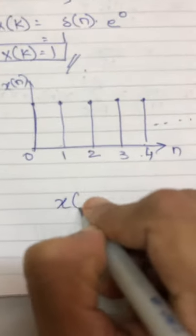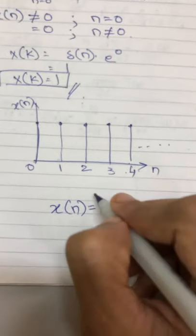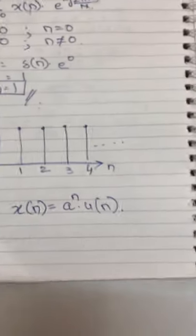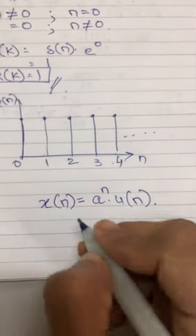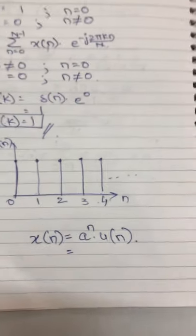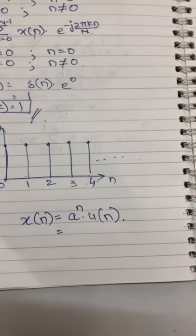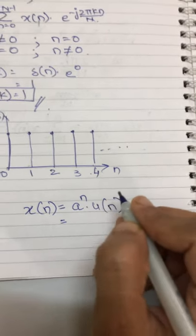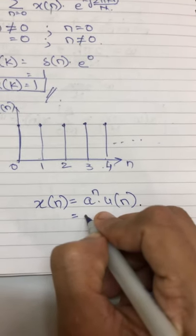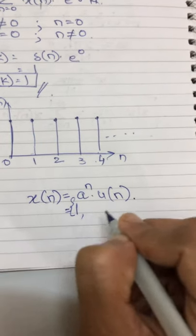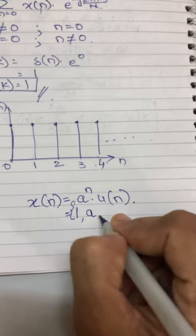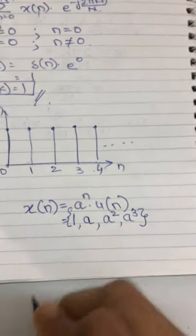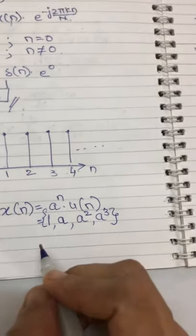Now your homework for the next lecture is find DFT of the signal: 4-point DFT of the signal x(n) equals a raised to n times u(n). Since we want to find out 4-point DFT, there have to be only 4 samples in the input signal. So for n equals 0, 1, 2, and 3, if I substitute n equals 0 here, I will have 1. Then n equals 1, if I substitute, I will have a. Then a squared and a cubed. This is your signal. Find out its 4-point DFT.